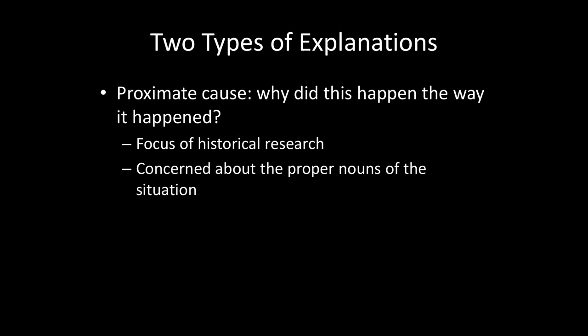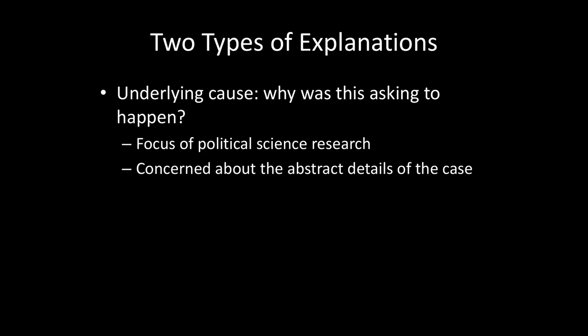The other type of explanation we can focus on is underlying causes. Underlying causes ask the question of why was this particular thing likely to happen. This is the focus of political science research, and it's concerned about the abstract details of the case. When I use the word abstract here, I don't mean that these things are necessarily difficult to comprehend. Instead, I want to think about what's going on underneath the surface — focusing less on the who, when, and where, and looking to see what might reappear in other cases beyond just this specific circumstance.